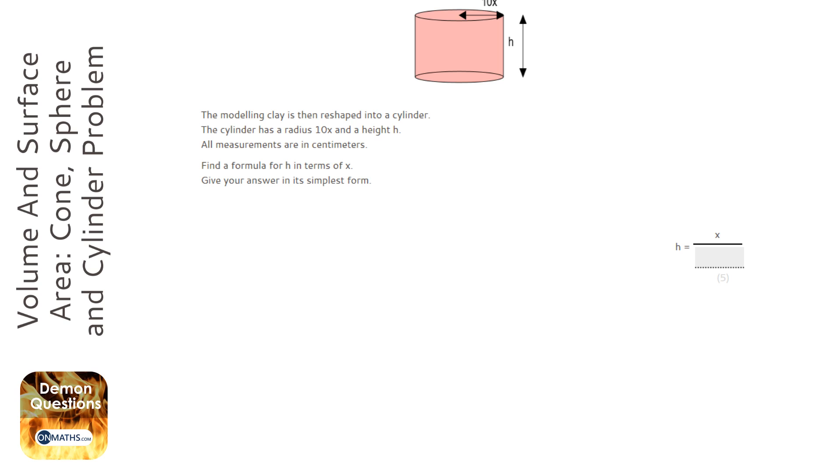So we've got a hemisphere and some of these formulas you will be given. A hemisphere is a volume of a sphere and then halved, so instead of four over three I can just say two over three, which is half of four over three, pi r cubed.